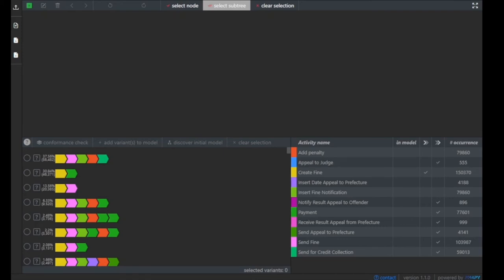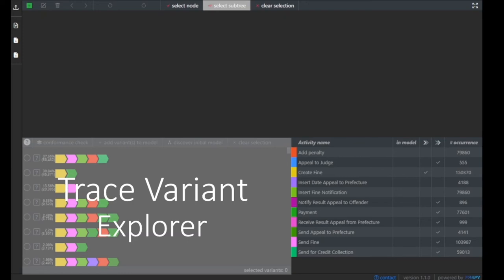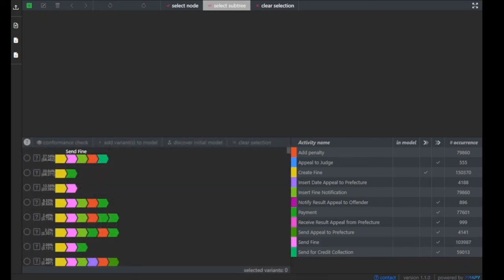Let's focus now on the trace variant explorer. The first row in the trace variant explorer tells us that in over 56,000 times the process was executed according to the following sequence of process activities: we started with create fine, then send fine was executed, followed by insert fine notification, add penalty, and finally the last process activity was send for credit collection. Over 56,000 times we have seen that the process was executed according to this sequence of activities.